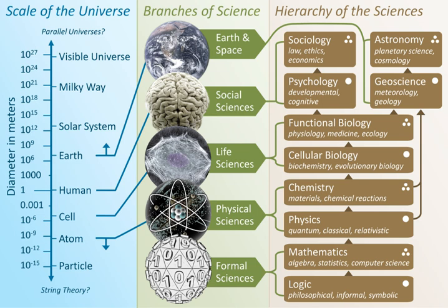Systems theory is the interdisciplinary study of systems in general, with the goal of elucidating principles that can be applied to all types of systems in all fields of research. Systems theory can reasonably be considered a specialization of systems thinking and a generalization of systems science. The term originates from Ludwig von Bertalanffy's General System Theory. In this context, the word systems is used to refer specifically to self-regulating systems, i.e. that are self-correcting through feedback. Self-regulating systems are found in nature, including the physiological systems of our body, in local and global ecosystems, and in climate.